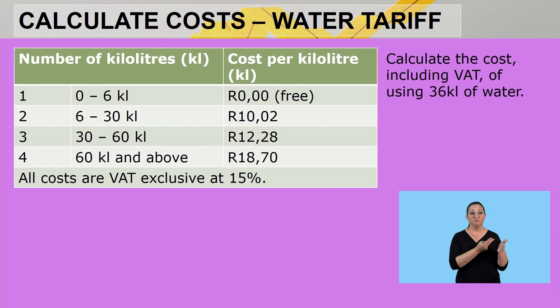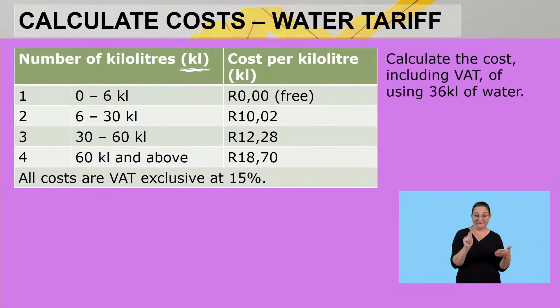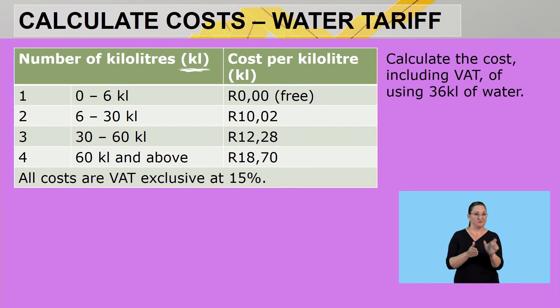Another thing you need to know is to be able to identify the type of tariff you are working with from the given context. When you see kilolitres, you know you are working with a water tariff. Always study what is given before you and understand the context. We are given blocks — we call each block a category or a bracket. This is a sliding scale, a continuation from above.